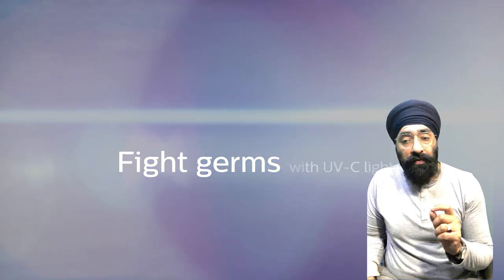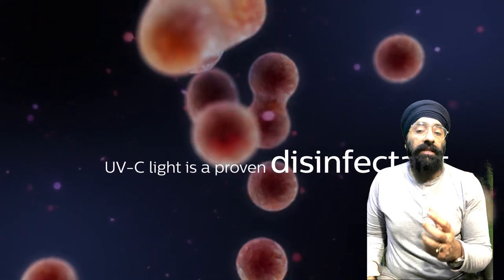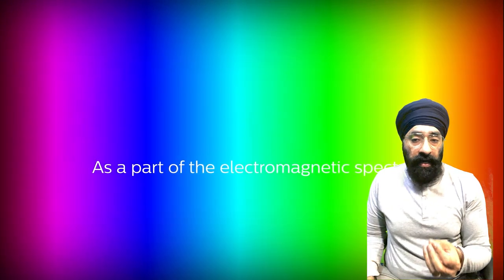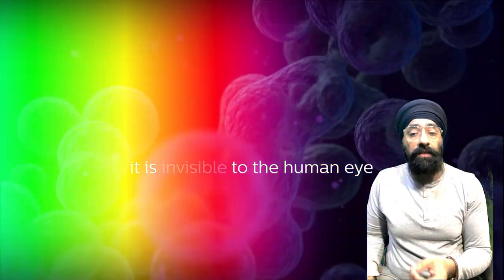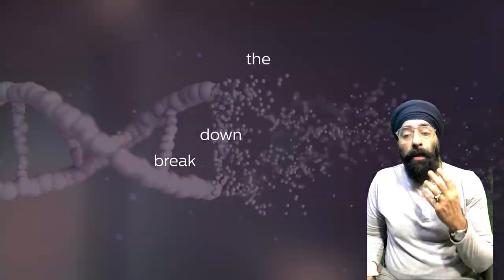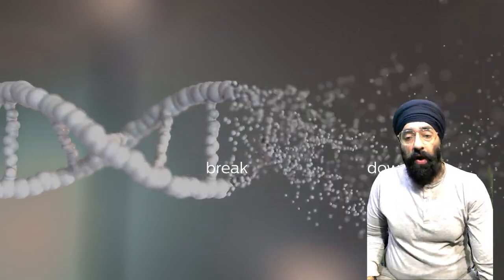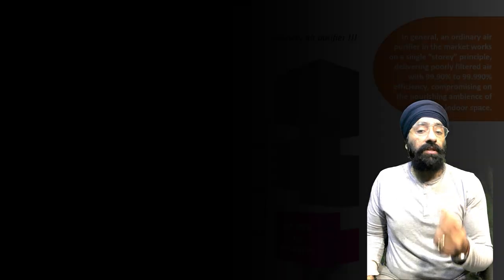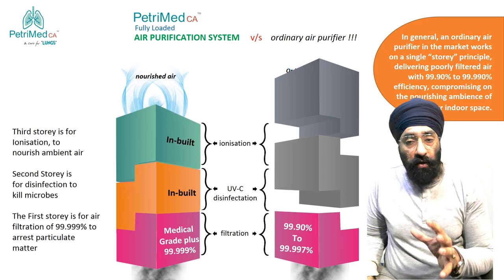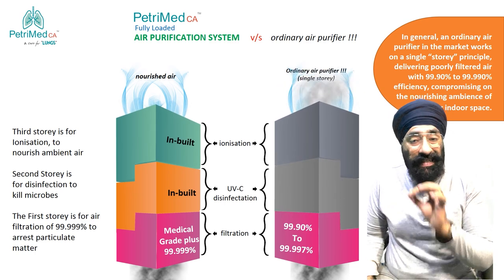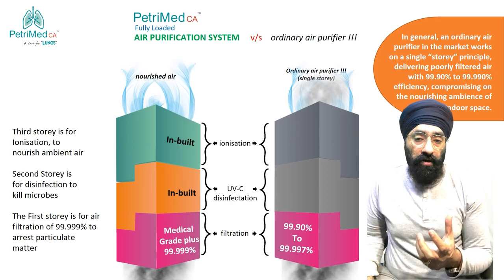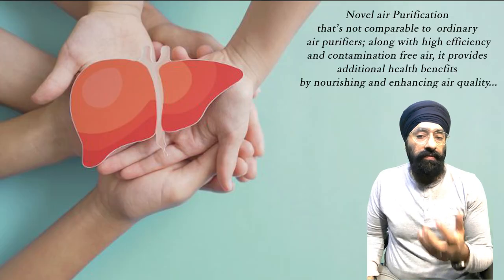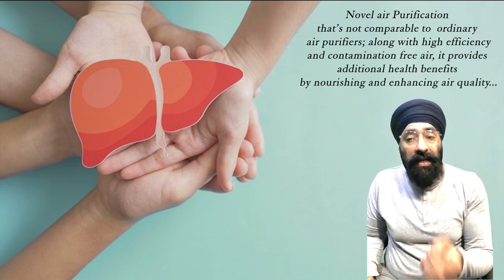It also fights germs with UVC light, which is proven as a disinfectant against viruses, bacteria, mold, and spores as part of the electromagnetic spectrum. It is invisible to the human eye and has the power to break down the DNA and RNA of viruses and bacteria so they can no longer reproduce or multiply. Additionally, negative air ionization and air nourishment along with purification are other health benefits. This is a multi-step, three-stage air treatment system — not merely purification. All these technologies have made this air purification system a holistic, unique, and novel solution not comparable to any ordinary air purifier, providing additional health benefits by nourishing and enhancing air quality.